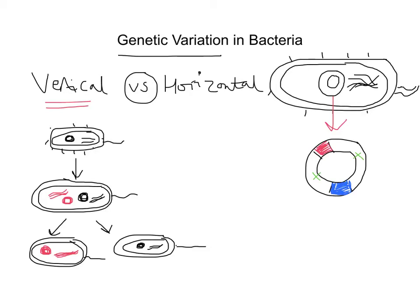Now if there were a mutation in this bacteria — if that bacteria were to have some of its genes spontaneously changing — then via vertical gene transmission it could pass it on to all of its offspring, the bacteria that subsequently come from it. So this one has now become two, and then those two cells can divide again to become four and eight, and you just get exponential growth. And that is what we call vertical gene transmission.